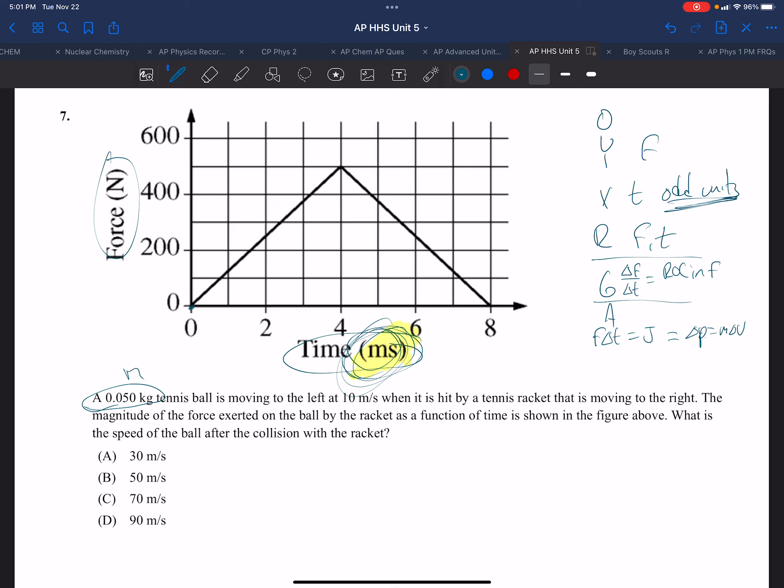So we have a mass tennis ball, it's going to the left at 10 meters per second, so here's our positive, here's our negative, we have a velocity of V0 of minus 10 meters per second, hit by a tennis racket swinging to the right. The magnitude of the force on the ball and the racket is shown in the figure. What is the speed of the ball after the collision with the racket?